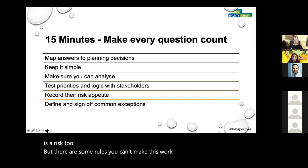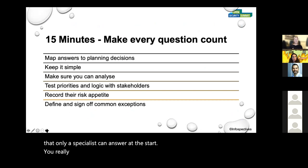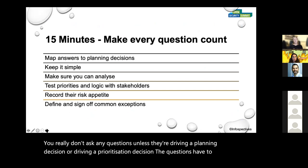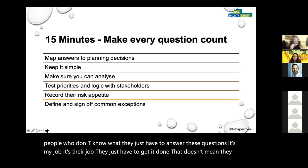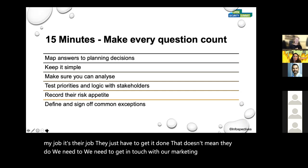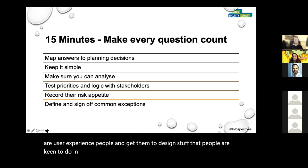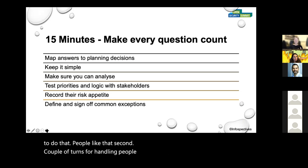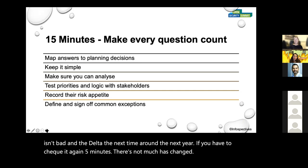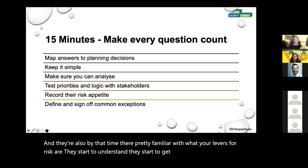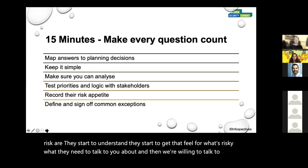There are some rules. You can't make this work if you're asking things that only a specialist can answer at the start. You really don't ask any questions unless they're driving a planning or prioritization decision. The questions have to be simple and pleasurable to answer — that sounds silly, but surveys work. People like them. After a couple of turns, people come back and say that isn't bad. And the delta the next time around — the next year — if you have to check again, it's five minutes. There's not much that's changed. And by that time they're pretty familiar with what your levers for risk are. They start to understand what's risky and what they need to talk to you about, and they're more willing to talk to you because you're not firing them a spreadsheet with 300 questions.